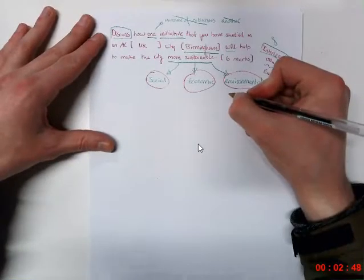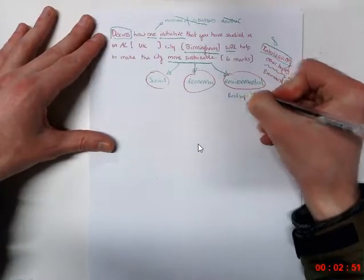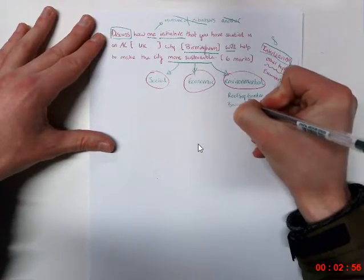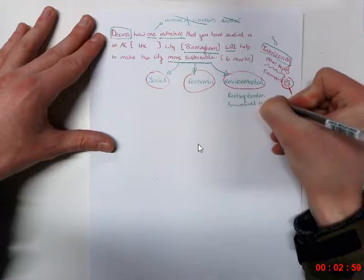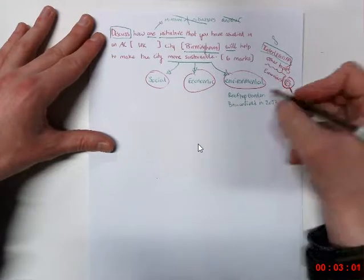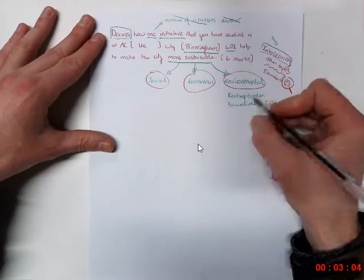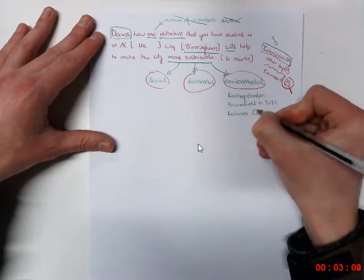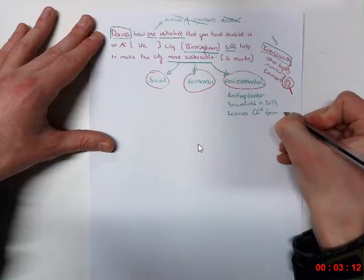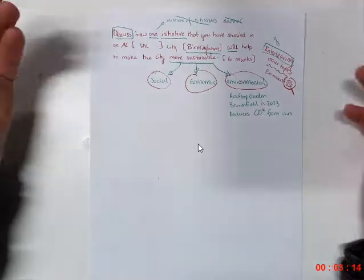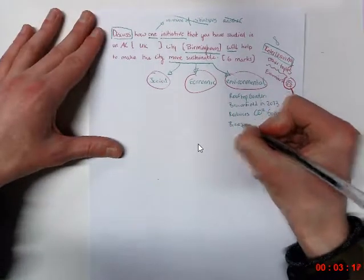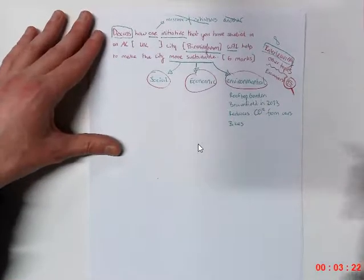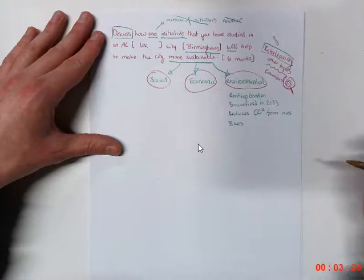They often go on tangents and talk about the rooftop garden. They talk about the fact that it was built on a brownfield site. All very useful information in 2013, just getting some of our facts and figures down. The fact that it improves biodiversity through the rooftop garden. The fact that it reduces CO2 from cars by encouraging people to go to work by bike. So bikes are often lumped in under environmental.